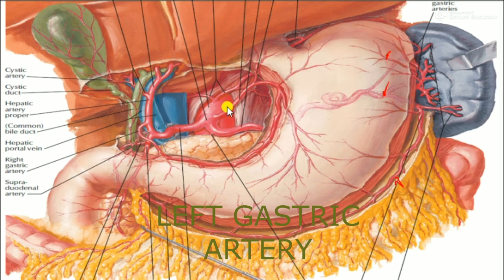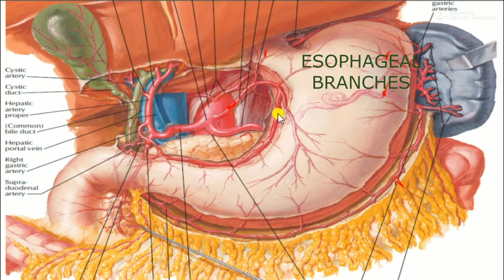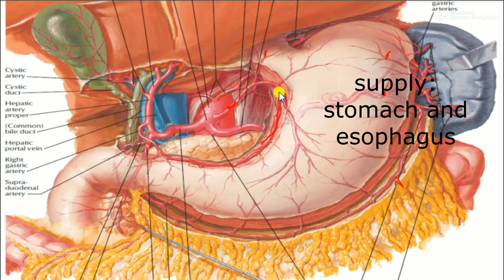The left gastric artery runs along its path and gives off esophageal branches. It is seen in the lesser curvature of the stomach and supplies the stomach. It anastomoses with the right gastric artery.